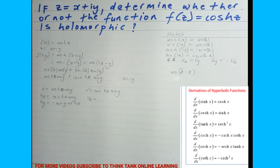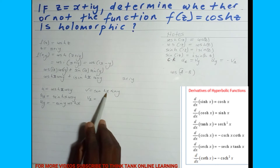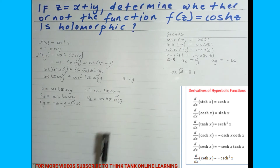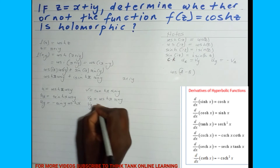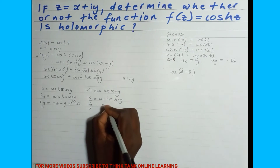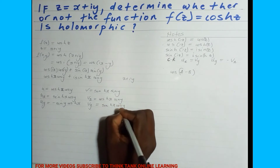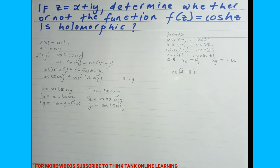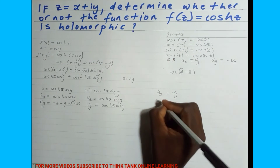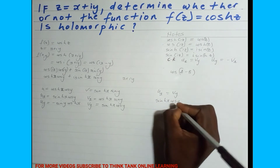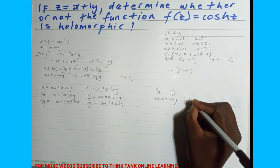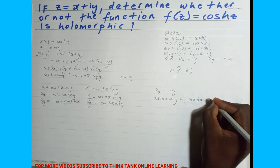Now for v = sinh(x)sin(y): differentiating with respect to x, the derivative of sinh(x) is cosh(x), so v_x = cosh(x)sin(y), treating y as a constant. Then differentiating v with respect to y: the derivative of sin(y) is cos(y), so v_y = sinh(x)cos(y). Now I want to verify the first equation: u_x = v_y. We have u_x = sinh(x)cos(y) and v_y = sinh(x)cos(y) — these are equal.